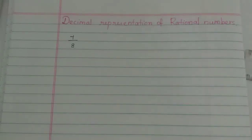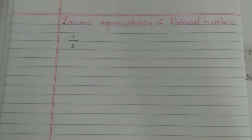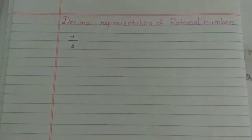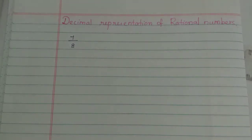Hi students. In this video, we have to look at decimal representation of rational numbers. There are three examples in your book, and in this video you will have a clear understanding.